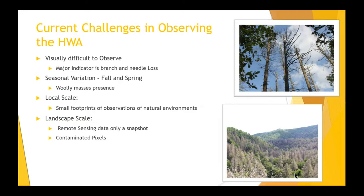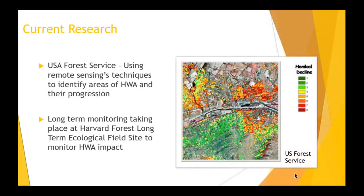Some of these locations require a hefty amount of field validation to determine if the decline is occurring as a result of the hemlock woolly adelgid. One of those larger-scale mapping efforts is by the US Forest Service, where traditionally land managers have relied on plot-based field sampling efforts to supply specific infestation information.